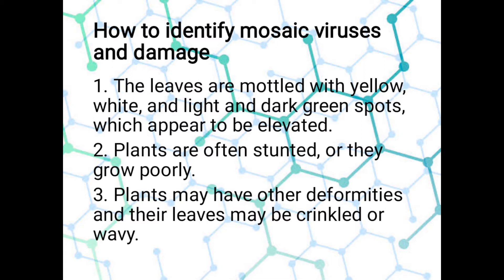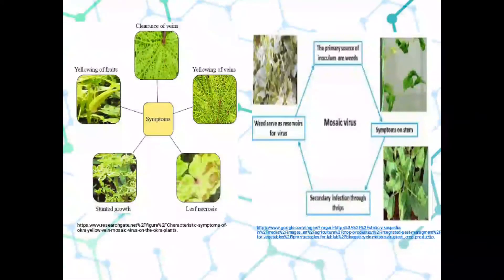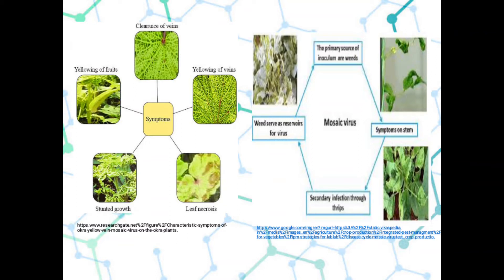These are the things we should be mindful of when cultivating okra in our backyard or for economic purposes. We should be attentive to those signs. The characteristics of okra mosaic virus affecting the plant include clearing of the veins, yellowing of the veins, leaf necrosis, stunted growth, and yellowing of fruits. The primary source of inoculum are weeds, so we should clean and groom our plants accordingly.